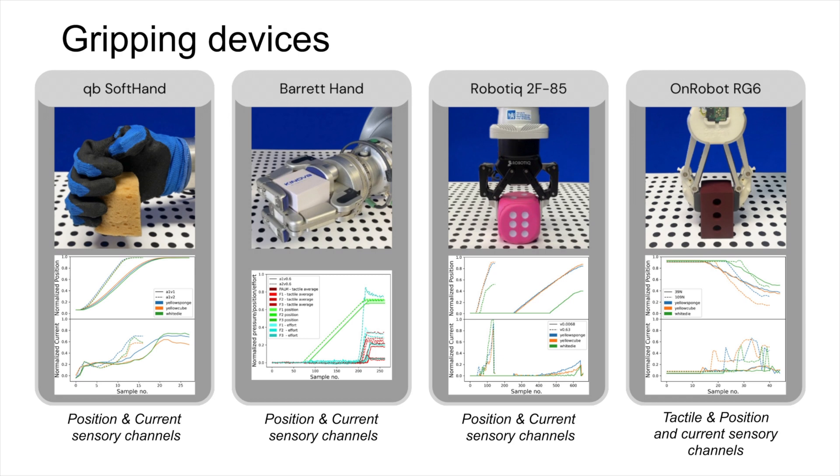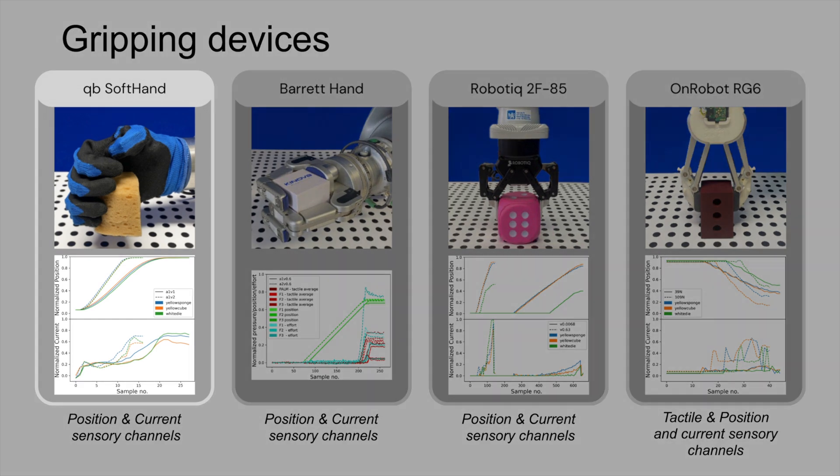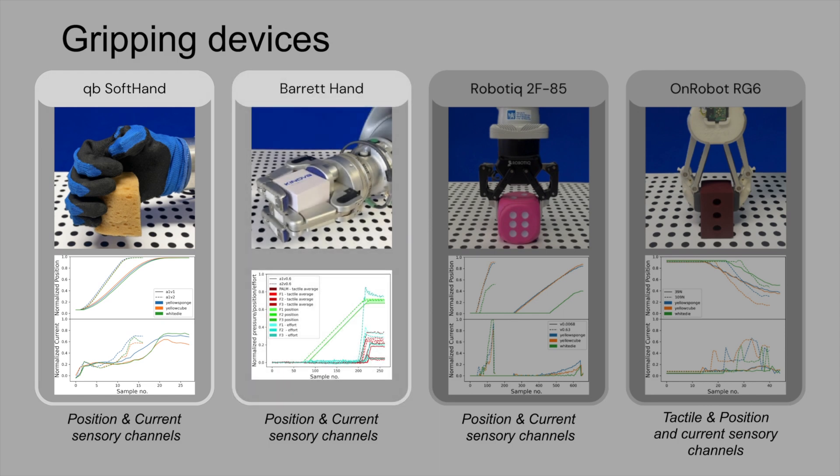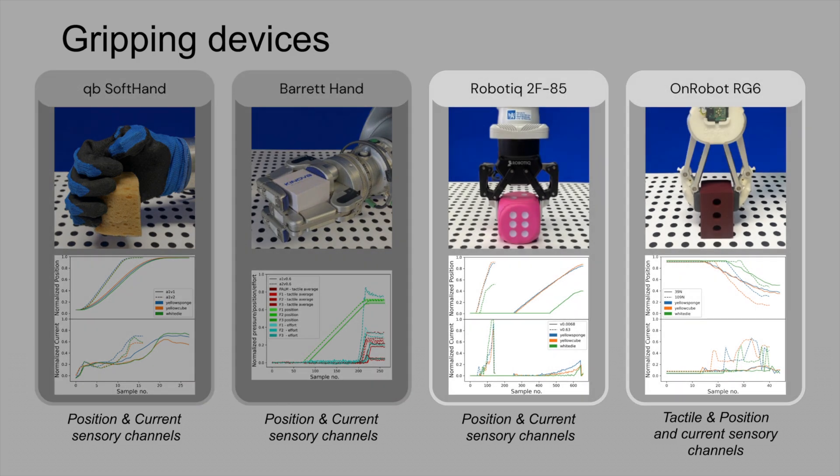We selected two pairs of gripping devices with varying anthropomorphism. The first includes the QB soft hand, controlled by a single motor, and the Barrett hand with tactile sensors. The second pair consists of two industrial parallel jaw grippers.